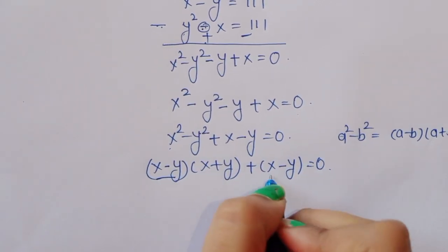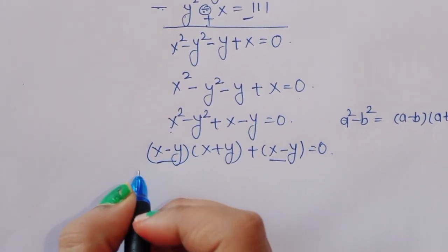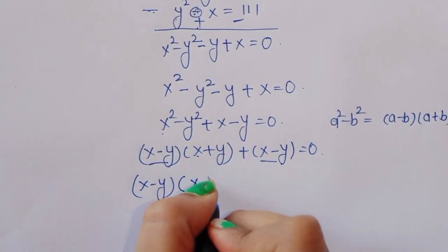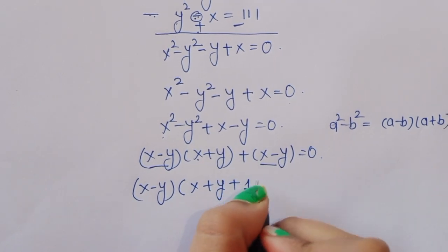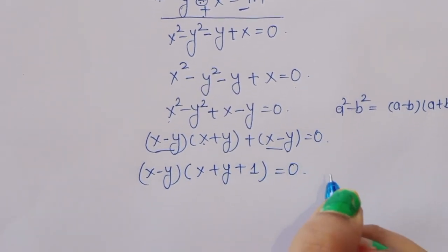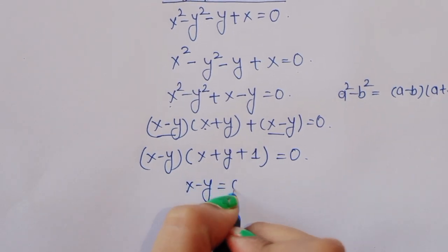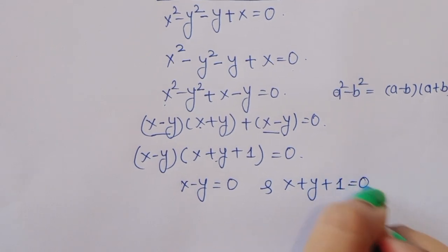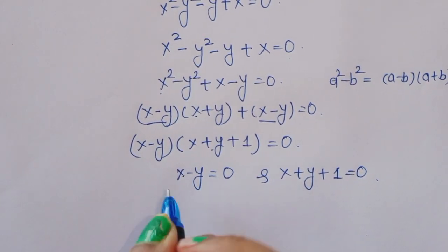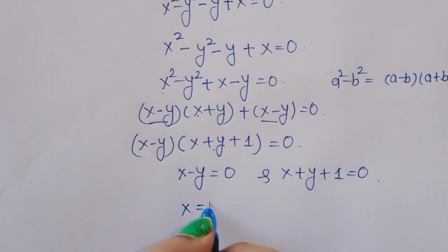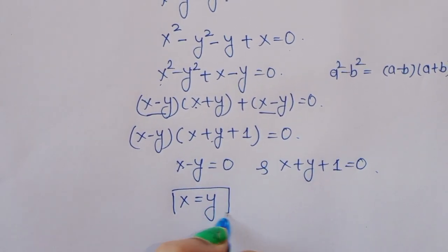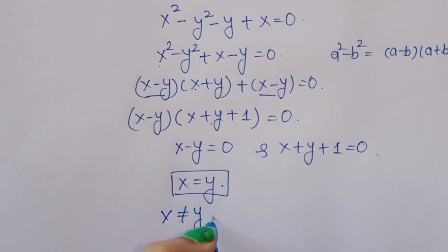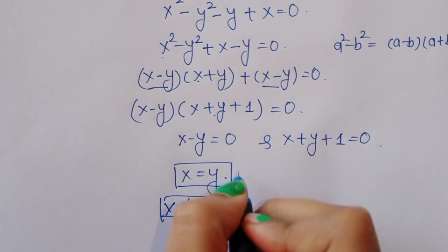You can see that (x minus y) is common in both terms, so we take (x minus y) as a common factor. The remaining term is (x plus y plus 1) equals 0. Now, (x minus y) equals 0 gives x equals y — but this is not a valid solution because the condition states x is not equal to y, so this case is rejected.